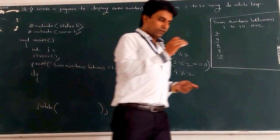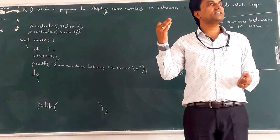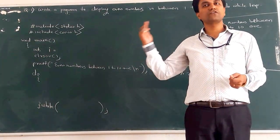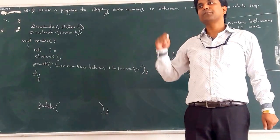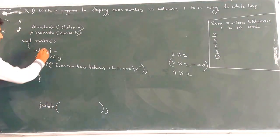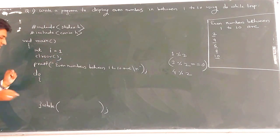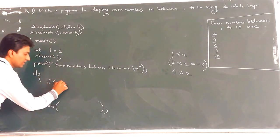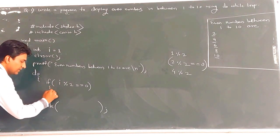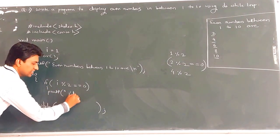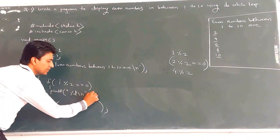So we initialize i equal to 1, since we take natural numbers starting from 1. In the do-while loop body, we write an if condition: if (i % 2 == 0), then we execute printf("%d\n", i), because each even number is printed on a new line. The initial value of i is 1. We check: 1 mod 2 gives 1, so the condition i % 2 == 0 is false, and the body of the if statement does not execute.